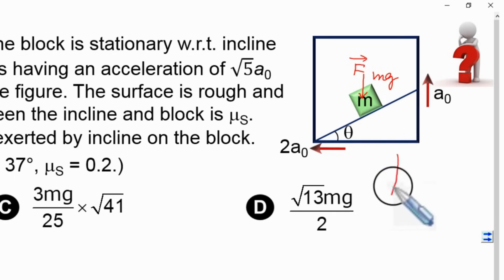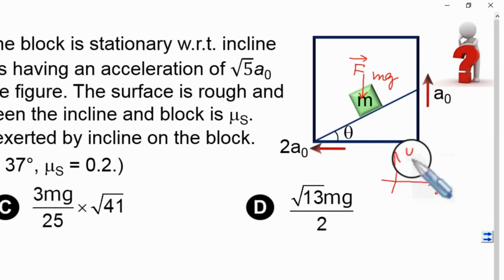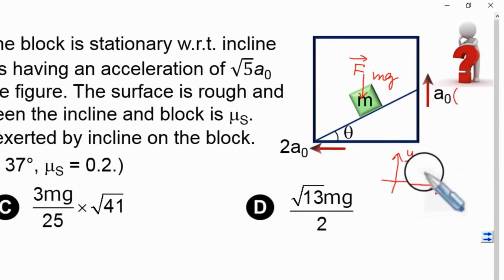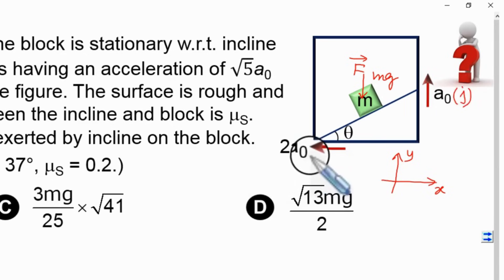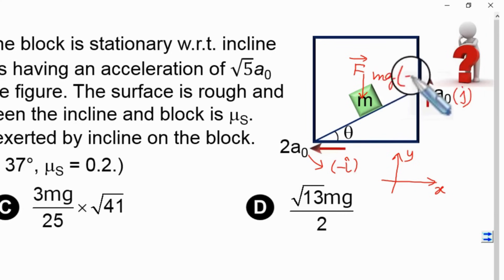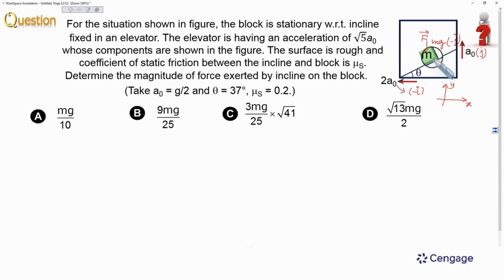Let us consider the directions: x-axis is the rightward direction and y-axis is the upward direction. We can express the accelerations as well as weight in vector form. We write a-naught with the symbol ĵ, and 2a-naught is multiplied by minus î because it is moving in the negative x-direction. The weight acting downward is minus ĵ.